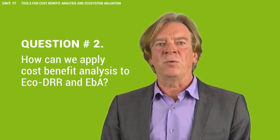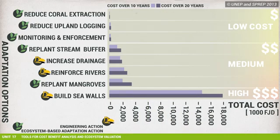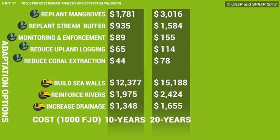Cost-benefit analysis is one of the most common decision-making tools. We will introduce it here with an example from Fiji. A recent study carried out cost-benefit analysis to assess climate change adaptation options for the city of Lami in Fiji. The study compared green solutions, such as planting mangroves and stream buffers, with grey investments such as engineering structures — for example, sea walls and increased drainage. The study concluded that ecosystem-based measures yielded a 19.5 Fiji dollar benefit-to-cost ratio compared to grey investment estimated at 9 Fiji dollars. Nonetheless, the study also revealed that in terms of avoided flood cost, grey investment provides 25 to 50 percent damage avoidance, while ecosystem-based options generally provide 10 to 25 percent in avoided damages.